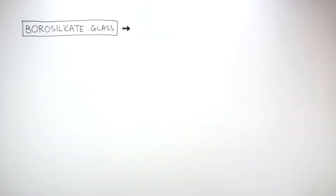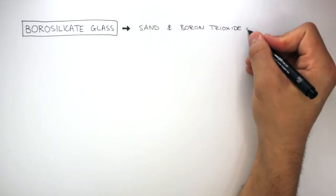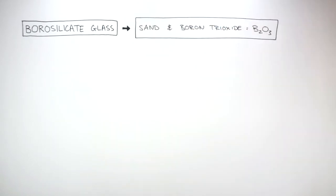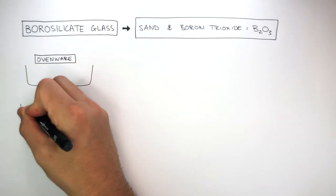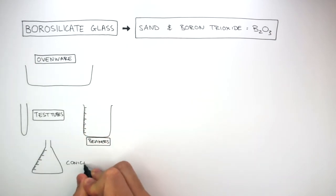Borosilicate glass is made from the raw materials sand and boron trioxide, B2O3. Borosilicate glass is used to make items such as ovenware, test tubes, beakers and conical flasks.